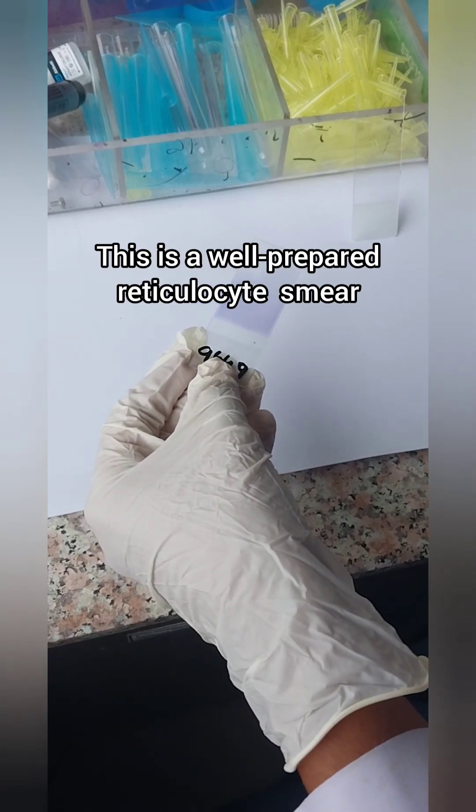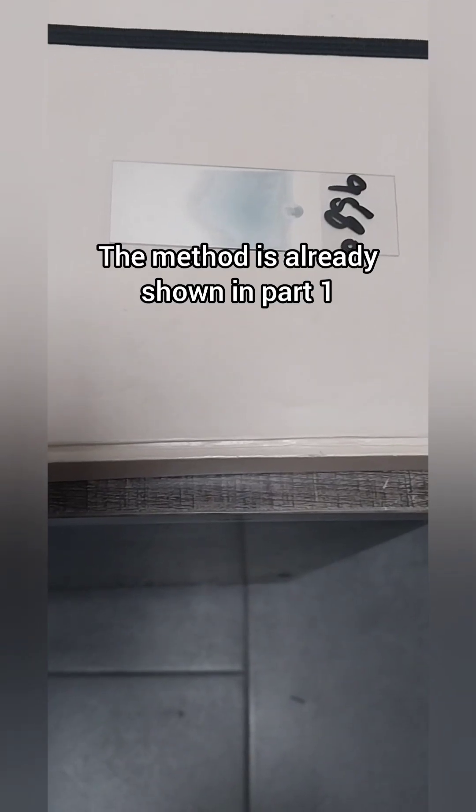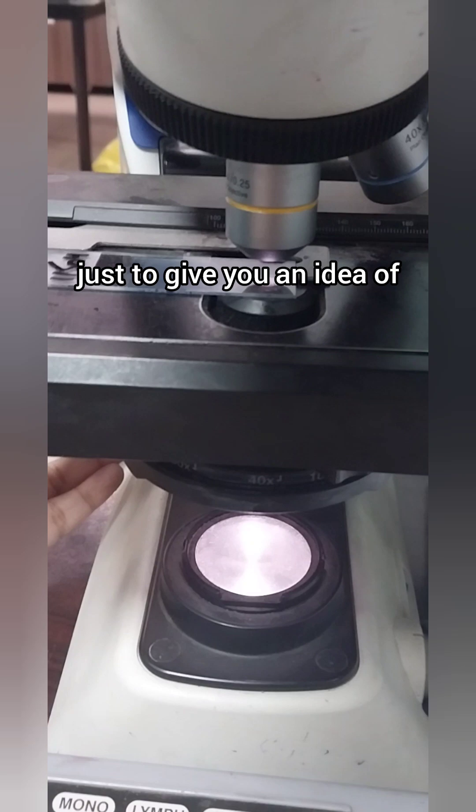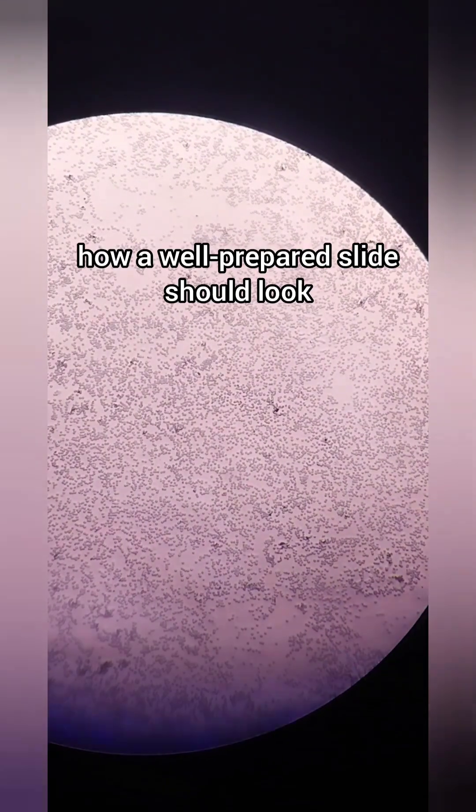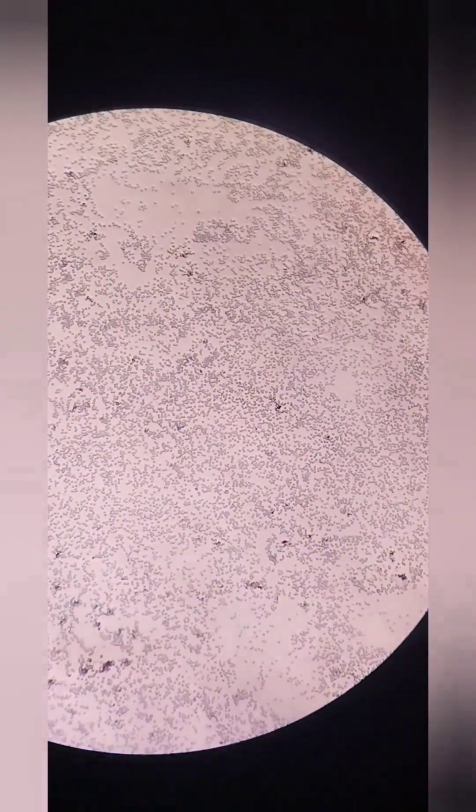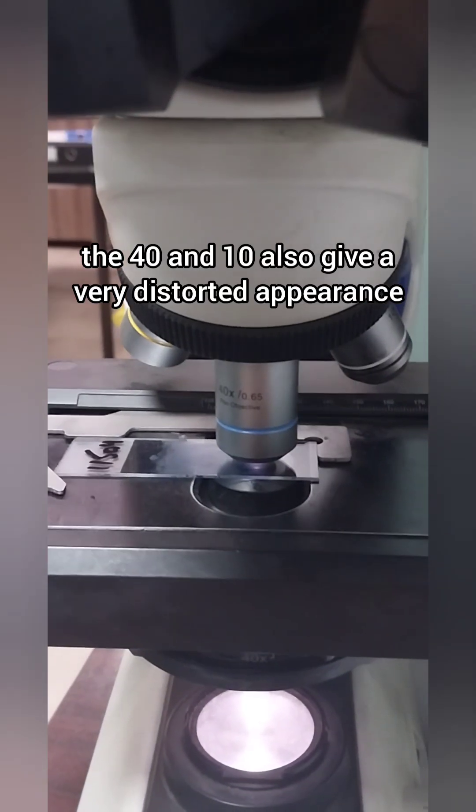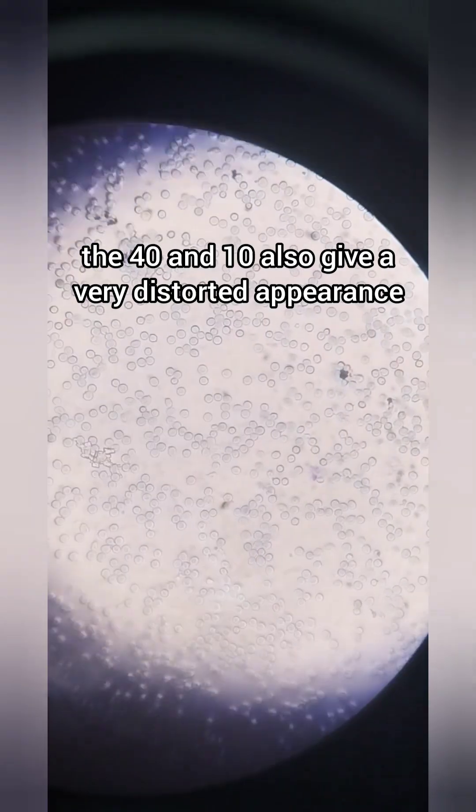This is a well-prepared reticulocyte smear. The method is already shown in Part 1. First, I'm going to show you how it looks on 10x to give you an idea of how a well-prepared slide should look. Otherwise, if the slide is not well prepared, the 40x and 10x also give a very distorted appearance and the color is dim.